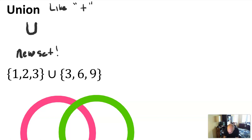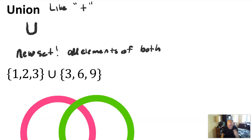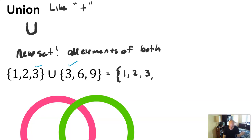Just like if you take two numbers and add them you get another number, if you have two sets and you union them you get a new set that is all elements of both. So the set {1, 2, 3} union with the set {3, 6, 9} would be the set — you do a curly brace to say you're starting a set — {1, 2, 3}. I don't have to write the three twice because sets don't take repeats. Then 6 and then 9. So the result is {1, 2, 3, 6, 9}.